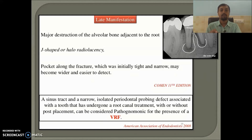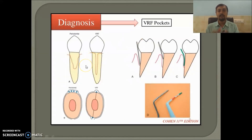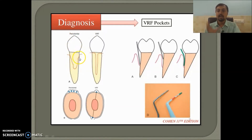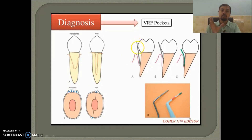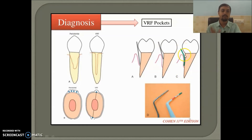Sometimes during cementation of a post or condensation, a slight crack-clack sound can be heard — that can also be a sign of VRF. In this diagram, you can see how the pockets associated with VRF differ from those of periodontitis. With periodontitis, pockets are wider; with VRF, pockets are deep and narrower. In VRF, due to narrow pockets, the standard periodontal probe will not go in, and you require a specialized plastic probe for diagnosis.